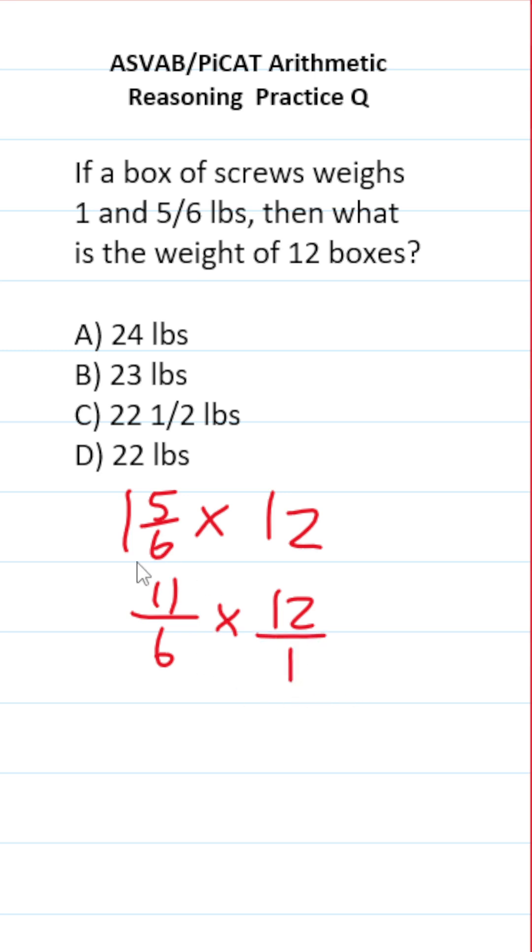And I'm going to write 12 as a fraction by placing it over 1. Now we're just multiplying two fractions, which means we're going to multiply straight across.